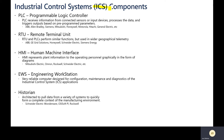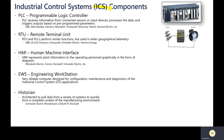Here are some components within the OT network or industrial control system (ICS). A PLC, or programmable logic controller, receives information from sensors or input devices, processes the data, and triggers output based on pre-programmed parameters. There are a number of different vendors that provide PLCs: ABB, Allen Bradley, Siemens, Mitsubishi, Honeywell, and more.